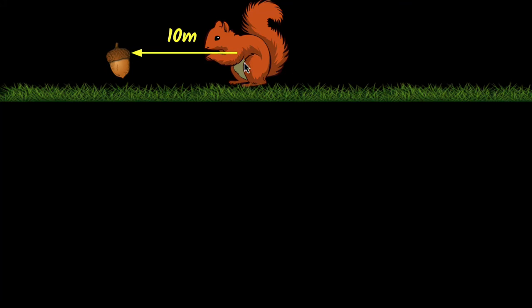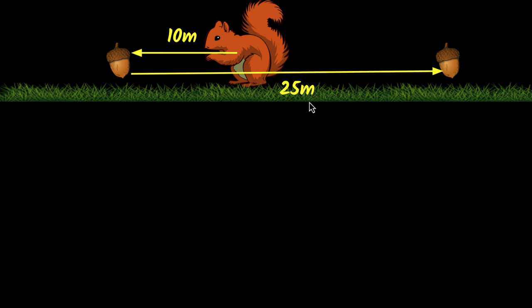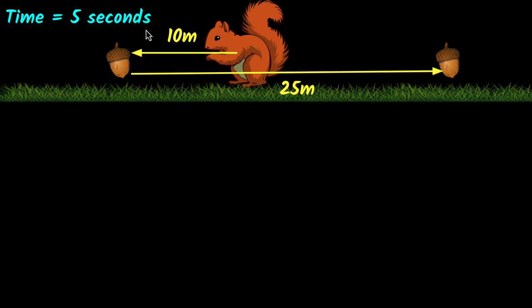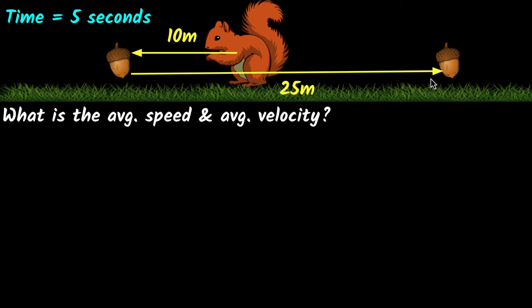We have a squirrel that first goes to the left 10 meters in search of a nut, gets it, turns back, and then travels another 25 meters to grab another nut. Let's say it takes the squirrel a total of five seconds to do all of this. The question we want to answer in this video is: what is the average speed and the average velocity of this squirrel?